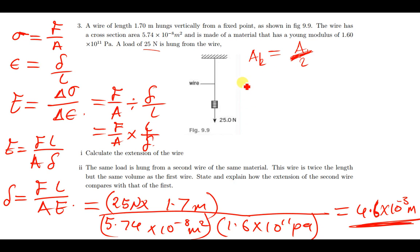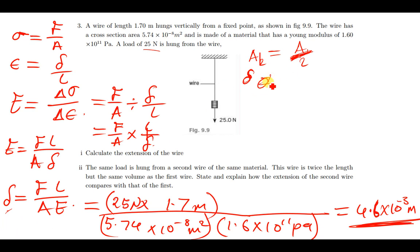We know that the extension is inversely proportional to the cross-sectional area. Since area₂ is half of area₁, the extension is affected accordingly. The extension is directly proportional to the stress.